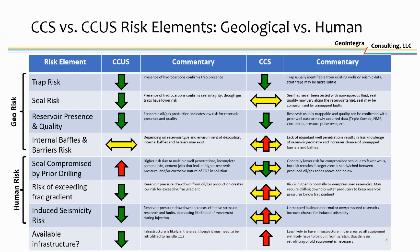Conversely, for CCS there may be a risk of exceeding the frac gradient if you don't understand your pressure profile very well. Those reservoirs likely aren't drawn down pressure-wise, so as you increase pressure by injecting CO2, you have to be careful not to exceed the frac gradient. Also, CCS reservoirs likely do not have as much data giving indications of where faults may be. It is possible you could run into a situation where an unmapped fault could cause induced seismicity, or an unmapped fault could provide a vertical connection to shallower reservoirs — which is not something you want.